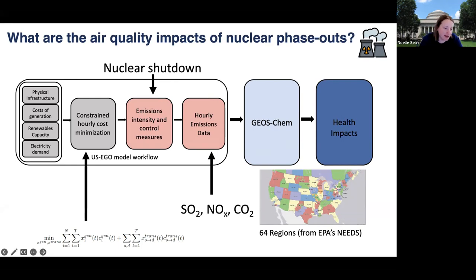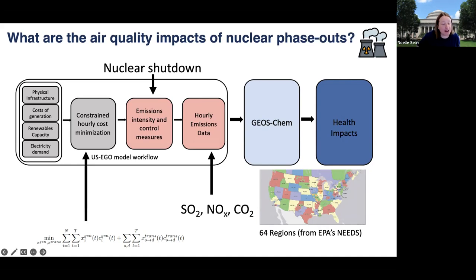We take this constrained hourly cost-minimization model and impose nuclear shutdowns on it, then calculate hourly emissions data for SO2, NOx, and CO2. We look at a couple of nuclear shutdown scenarios: first, what happens if we shut down as immediately as possible — a stress test of the system to see the fundamental modes of response. Second, what if nuclear and coal are shut down at the same time, to understand how a broader coal phase-out in the context of nuclear would affect the system. Third, what if that's happening at the same time as aggressive growth in renewables, using future projections to examine this systemic behavior.